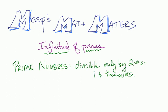Prime numbers are whole numbers that are divisible only by exactly two numbers, one and themselves.